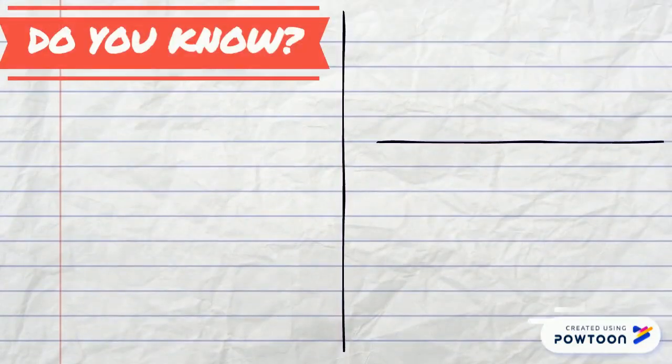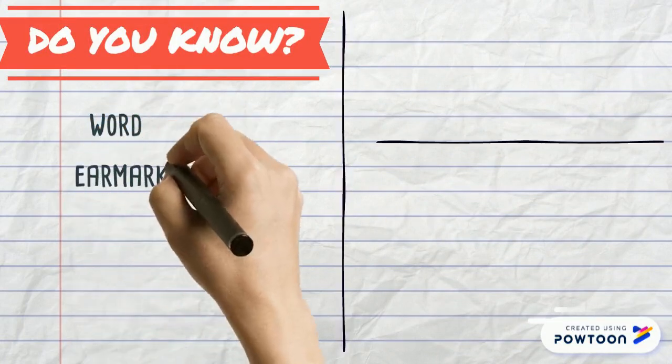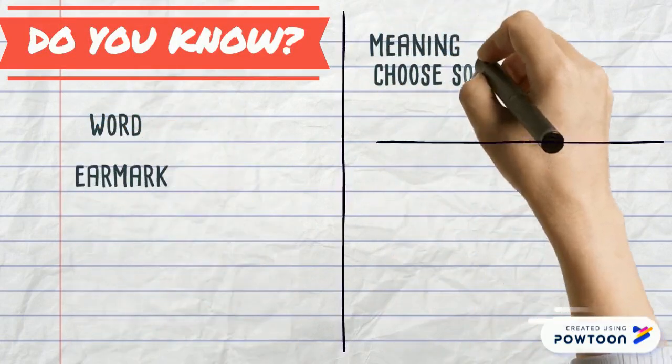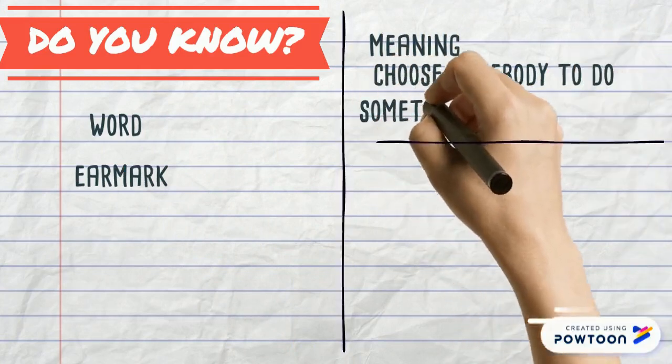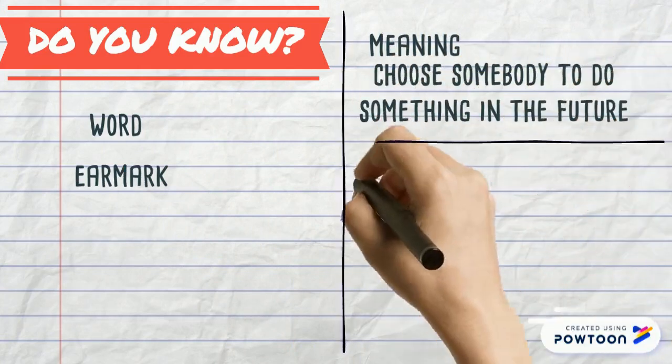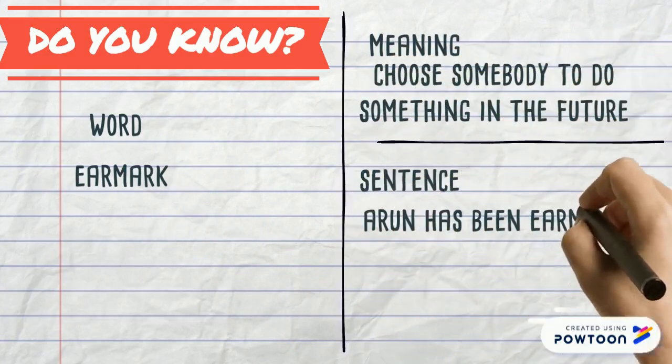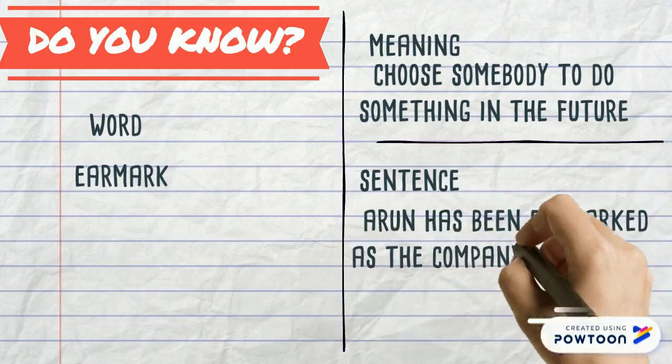The second word is earmark. Its meaning is to somebody to do something in the future. Sentence is Arun has been earmarked as the company's next CEO.